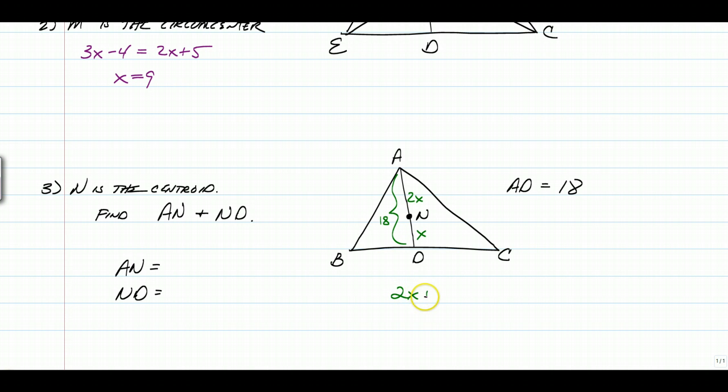2X plus X is equal to 18, which means 3X is equal to 18, and we know that X is equal to 6.